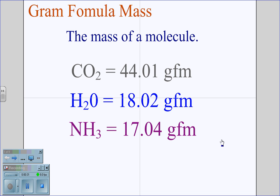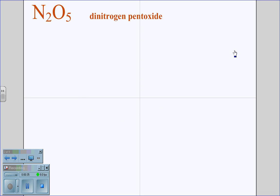But where do these numbers come from? How do you calculate gram formula mass? Let's start with a simple covalent molecule, dinitrogen pentoxide, N2O5.